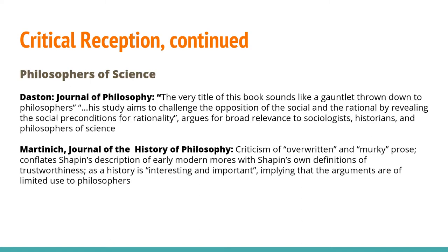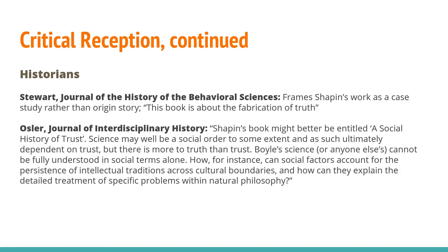Within the field of philosophy, there were also supporters and detractors. Daston, whose work is cited in A Social History of Truth, argues that the work has broad relevance for sociologists, historians, and philosophers of science, despite its potentially inflammatory title. Martinich criticizes Shapin's prose as overwritten and murky and implies that his arguments are of limited use for the field of philosophy. The title was generally well received by historians. Stewart correctly points out that Shapin's work on Boyle is a case study rather than an origin story, demonstrating how truth and reliability may be constructed rather than claiming that Boyle personally created experimental science. What Shapin says Boyle created was a personal identity that became a major paradigm influencing the development of scientific communities. Osler, however, argues that there is more to truth than trust, taking a more restrictive rather than liberal view of truth, and feels that Shapin is a bit too dismissive of the role of science in revealing objective realities.